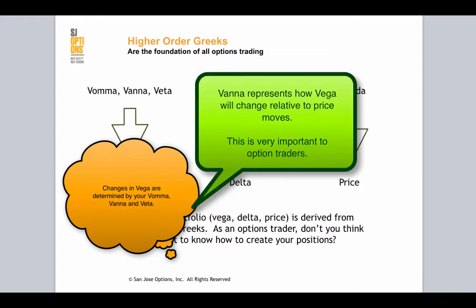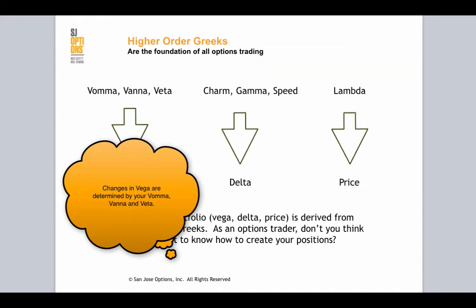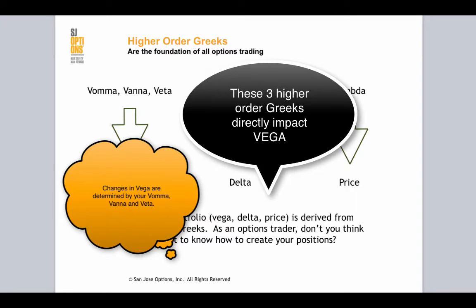And then as the price moves around, your Vana position is going to affect the Vega. As you pass through time, your Veda position is changing your Vega. So there are three very important higher order Greeks that directly impact what your Vega actually is.